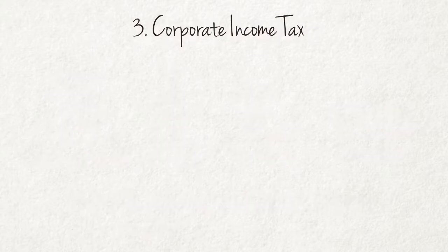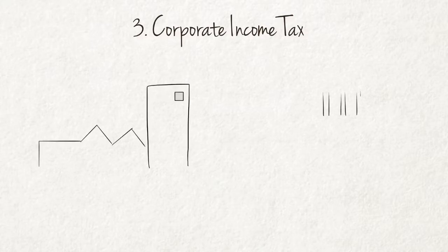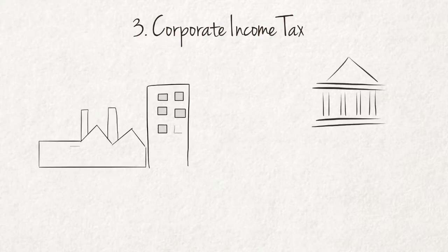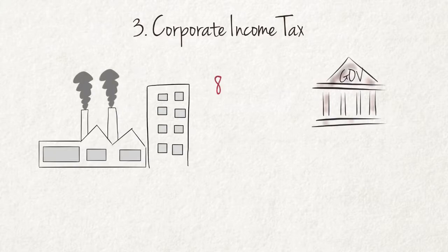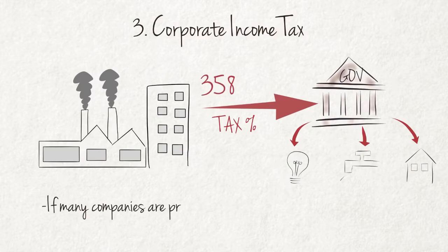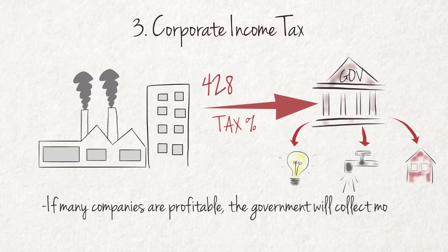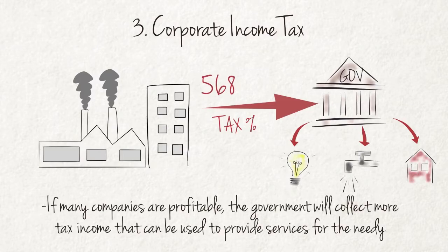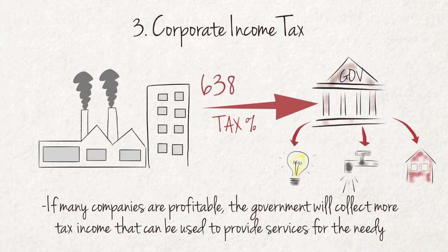Corporate income tax is the third important source of government income. When companies make profits, these profits are subject to tax. If many companies are profitable, the government will collect more tax income that can be used to provide services for the needy.